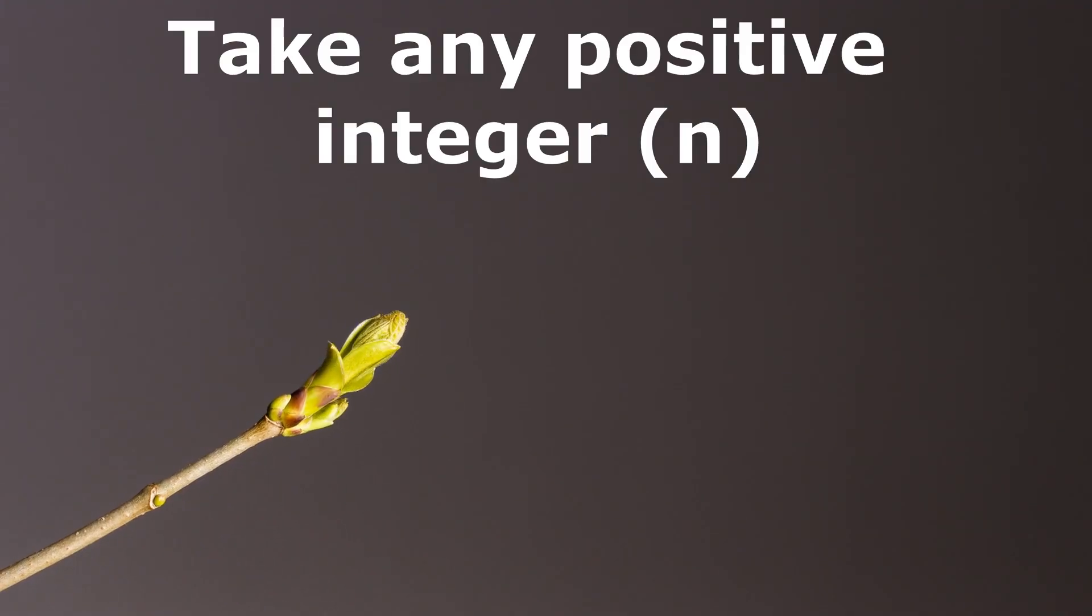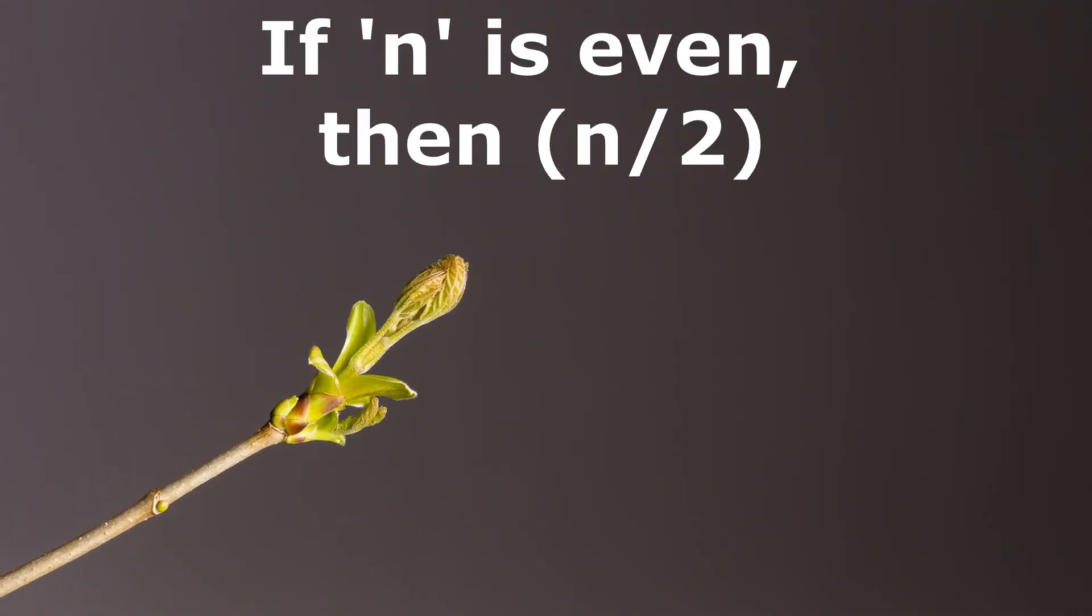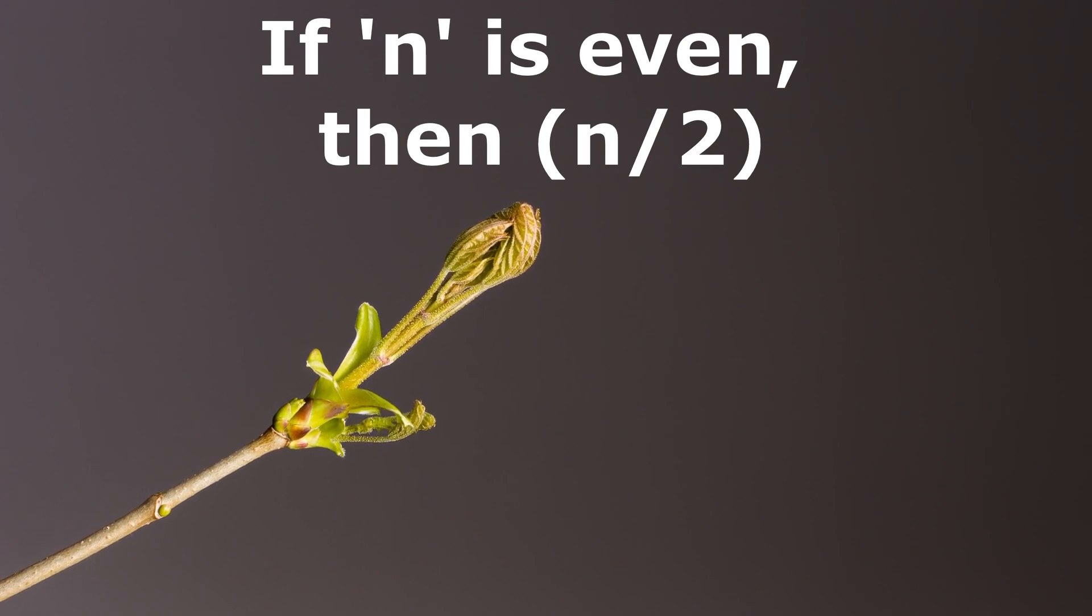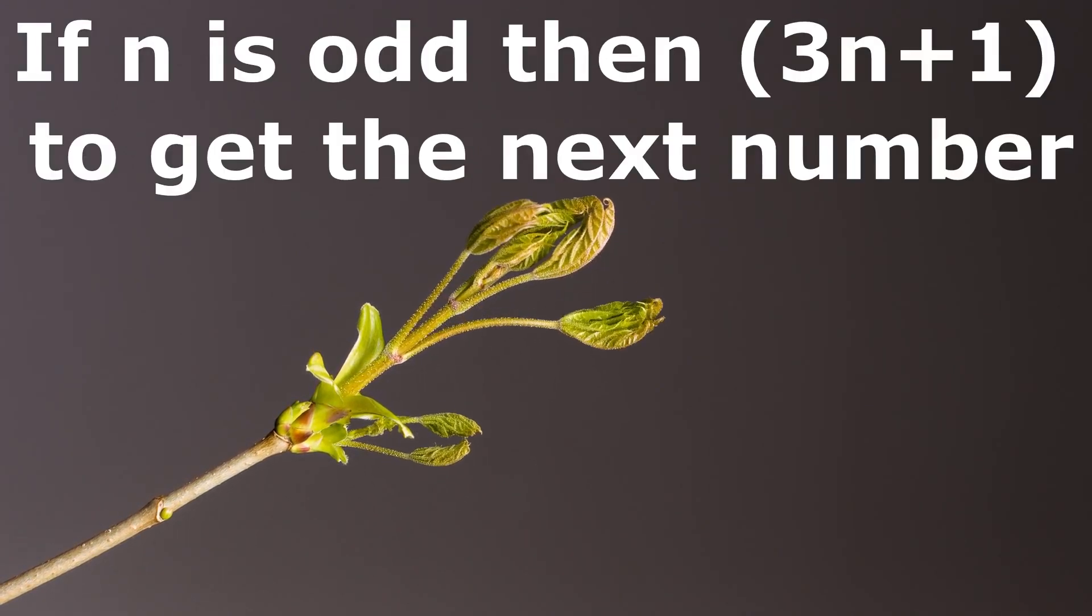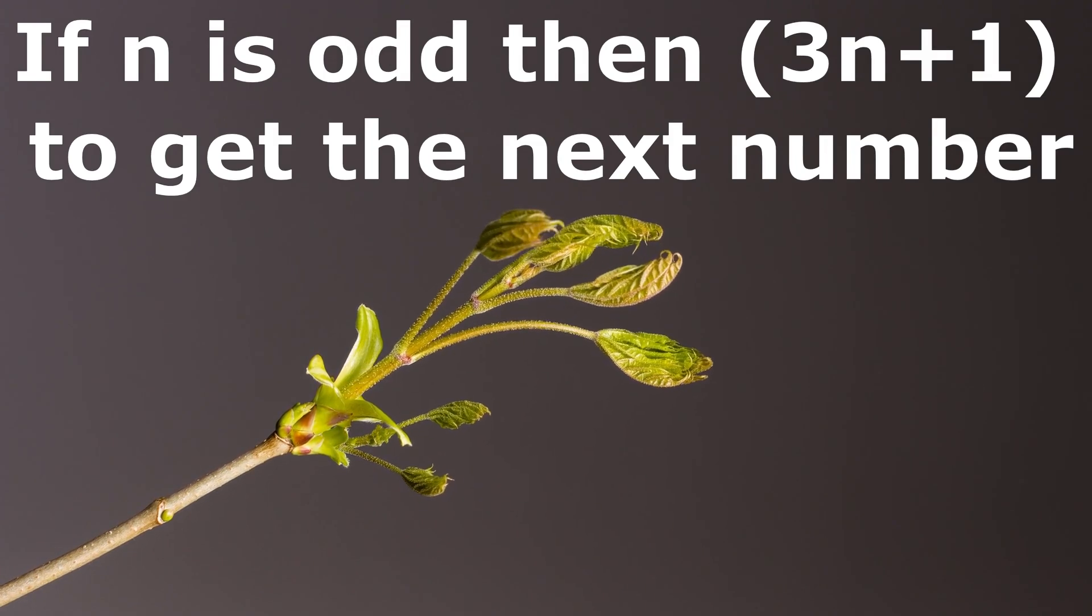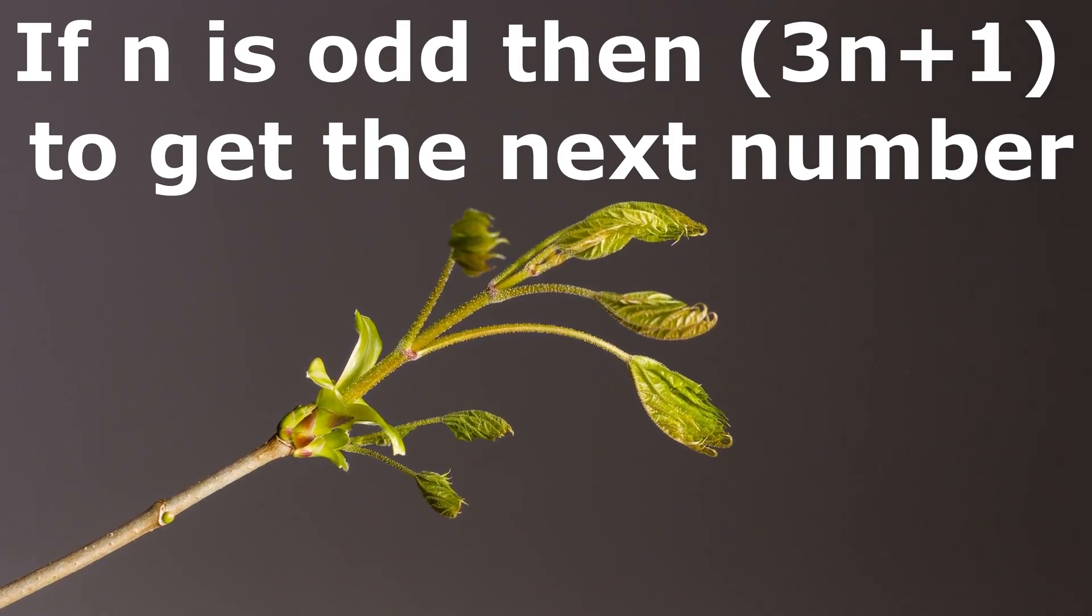The problem is simple. Take any positive integer. If this number is even, then divide it by 2. But if the number is odd, then multiply the number by 3 and add 1 to get the next number.